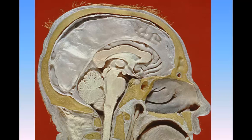The fourth ventricle, or cavity of the hindbrain, is situated in front of the cerebellum and behind the pons and upper half of the medulla oblongata. Developmentally considered, the fourth ventricle consists of three parts: a superior belonging to the isthmus rhombencephali, an intermediate to the metencephalon, and an inferior to the myelencephalon.